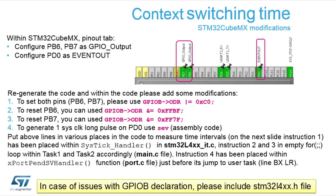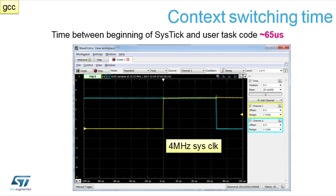When we run the microcontroller with a four-megahertz SysTick, we can see the time when one task was finished and the other was entered. By implementing this, we can measure the time and see that the beginning of the SysTick and the beginning of the user task code took 65 microseconds. If you take 65 microseconds and multiply by the system clock running at four megahertz, we can calculate how long the task switch is — four cycles per microsecond multiplied by 65 microseconds.